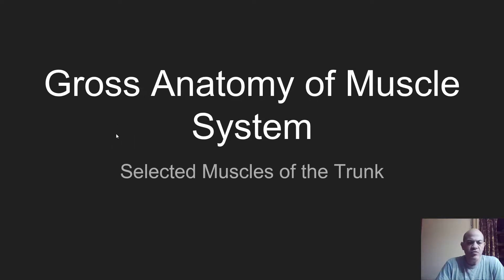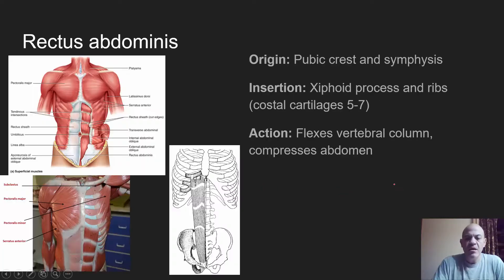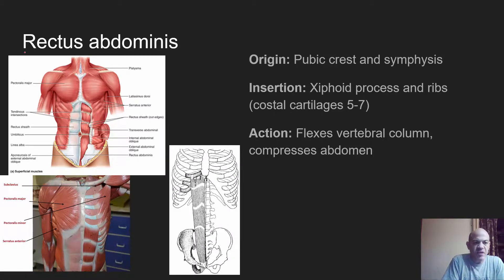This is part four of a tutorial on the gross anatomy of the muscle system. Here we're going to be looking at some of the muscles of the trunk area. The first muscle we're going to look at is the rectus abdominis, also commonly known as abs.